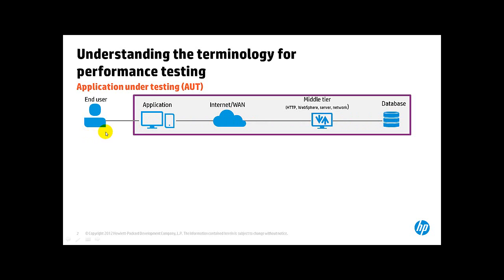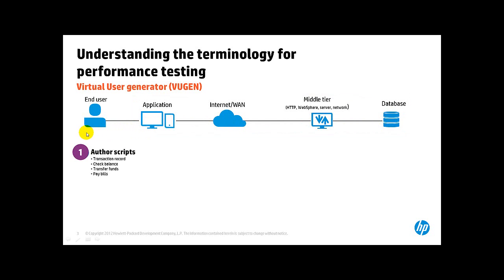The next step is to simulate the end user transaction within that application, and for that you need to author scripts. You need to create a transaction to simulate the same steps that the end user is doing. In order to do that, performance testing solutions provide what we call a Virtual User Generator.